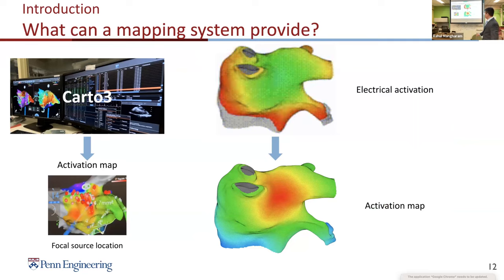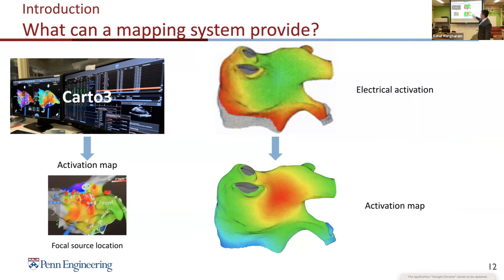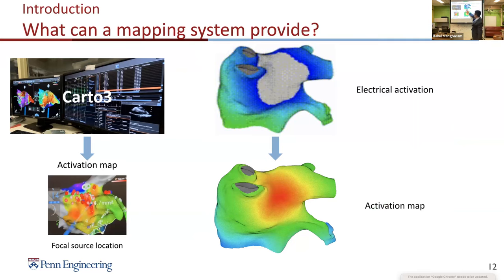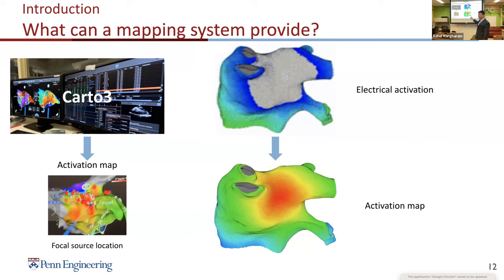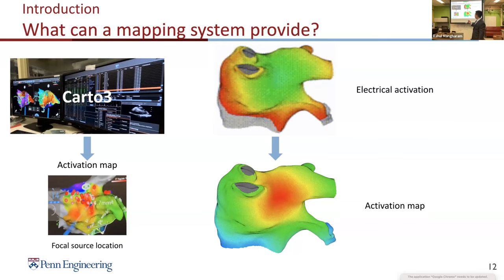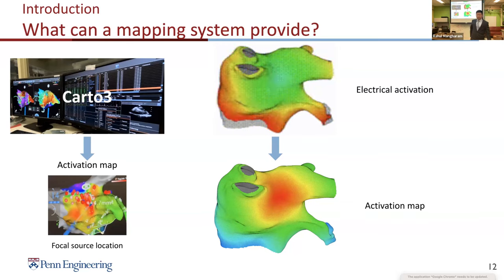Another type is the activation map. If we have an atrial fibrillation activation starting at the center and propagating through the atrium, we convert the activation sequence into a color map where red represents the earliest activation location and blue represents the latest. This helps the physician identify if there is an abnormal activation source — the normal site would be around the Bachmann bundle — and ablate those places to stop abnormal activation.